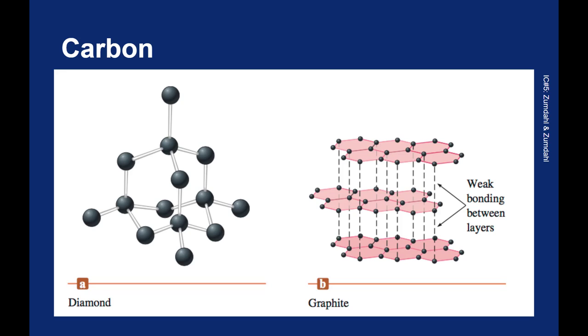Those fullerenes I talked about earlier, those buckyballs, they're actually a combination of sp2 and sp3 hybridized carbon. And so they wrap around and make a sphere shape. It looks a lot like a soccer ball.